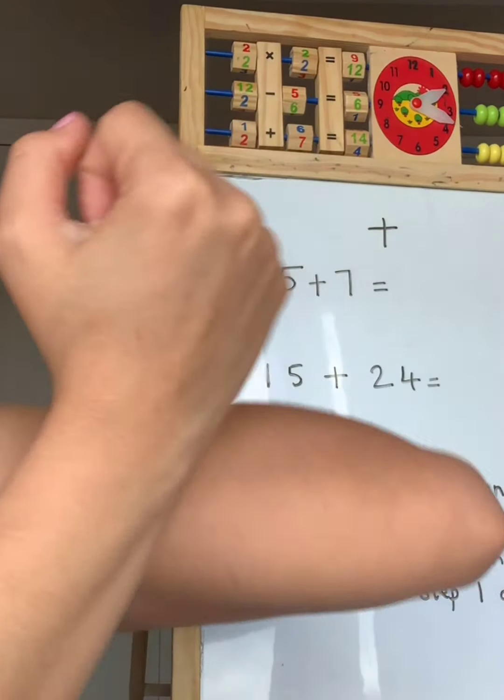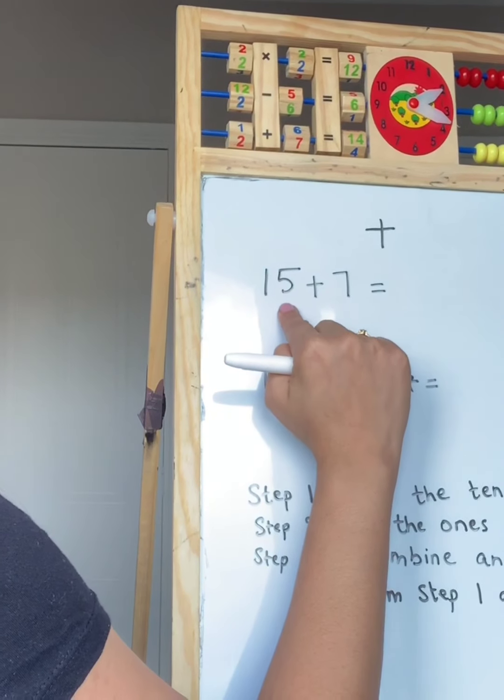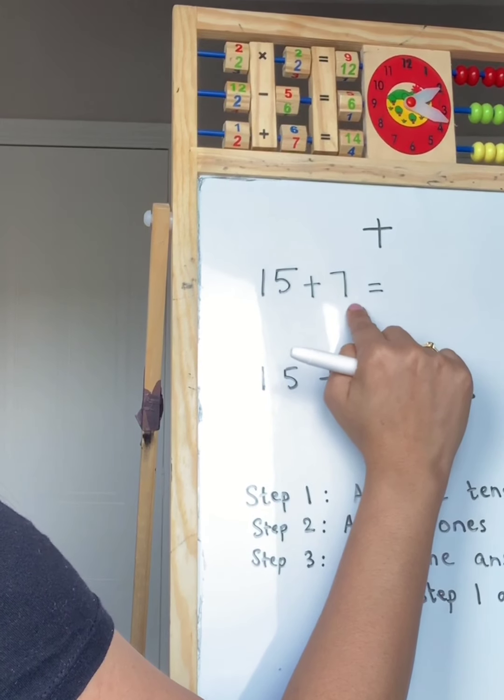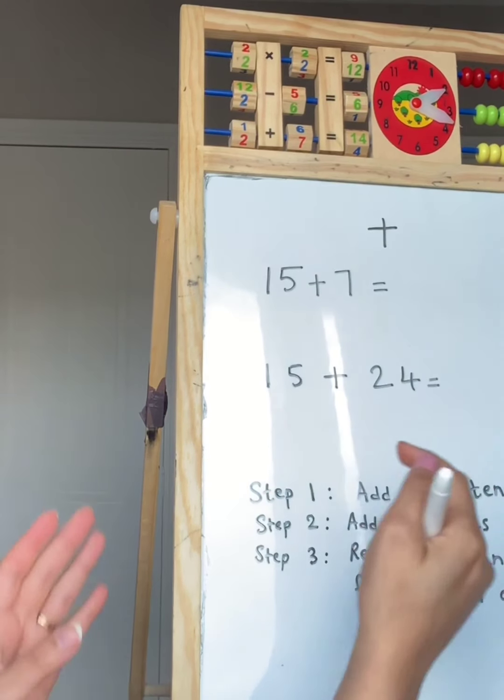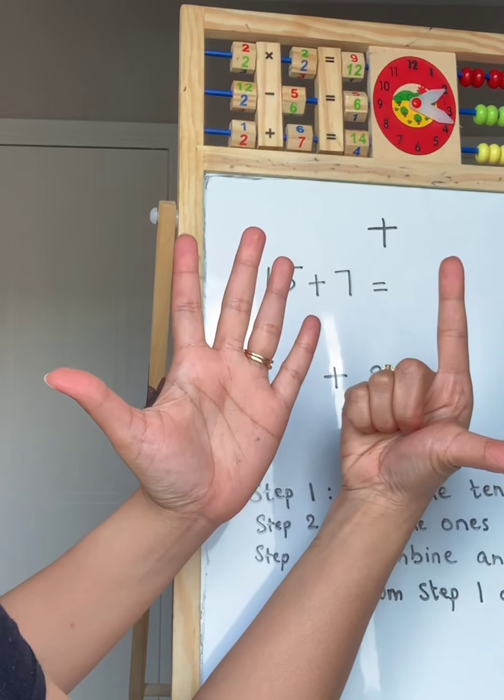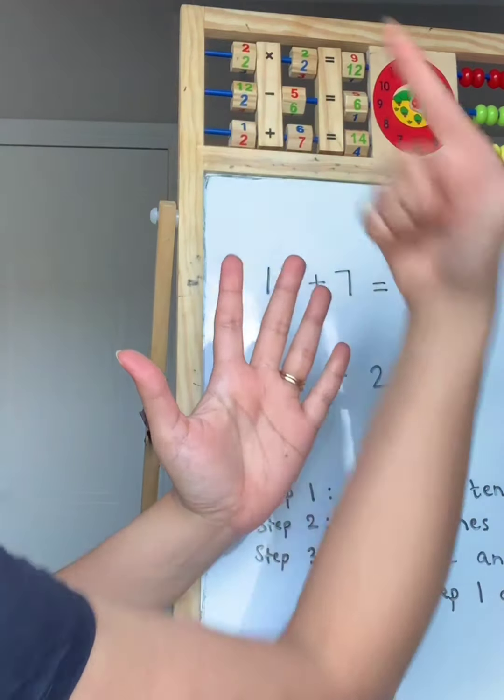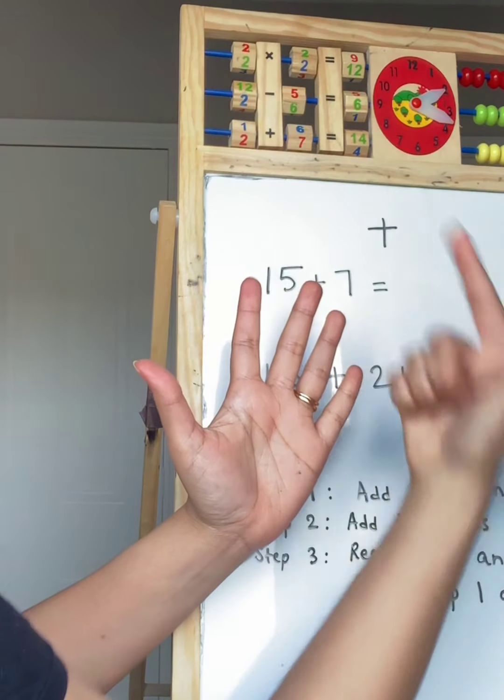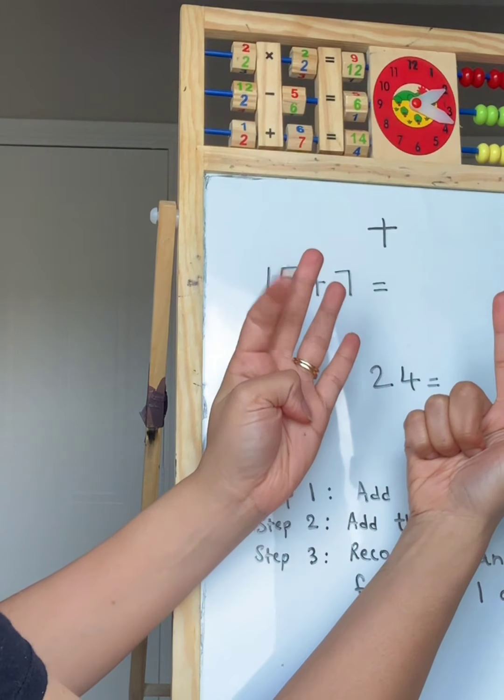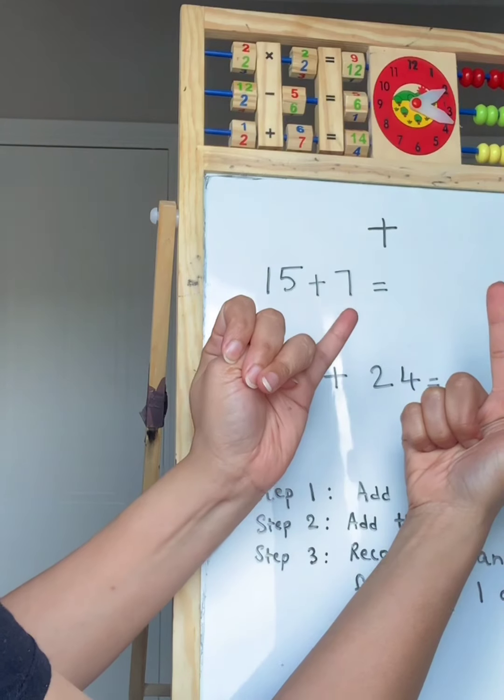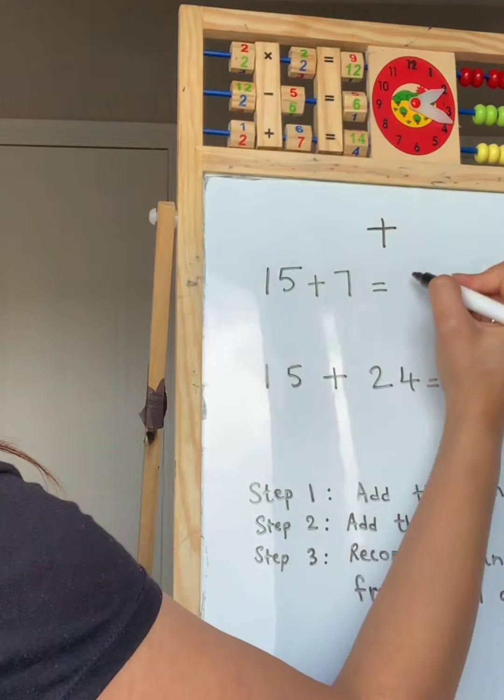Okay. The first one is add. Add makes a number big. Our number sentence is 15 add 7. The minute we spot a single digit number, we know that it's going to be easy now. We have 7 fingers. So 7 on our finger and the big number in my head. And we're going to count forward. 15 in my head. Counting forward. 16, 17, 18, 19, 20, 21, 22. I'm going to write my answer.